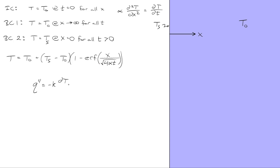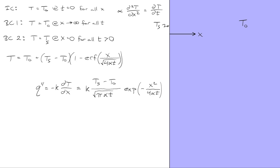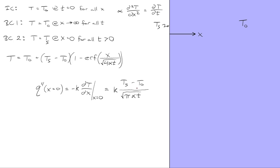We can also examine the flux, which by Fourier's law is negative k times the partial derivative of temperature with respect to x. Differentiating our solution for temperature with respect to x results in a flux expression. Deep into the solid, for large values of x, the flux equals zero because the heat hasn't penetrated that far yet. At large values of time the flux also decays to zero, since most of the solid has already warmed up to the surface temperature and there's no temperature gradient. At x equals zero, the exponential term drops out, and this indicates that the thermal flux at the surface decays as time progresses.